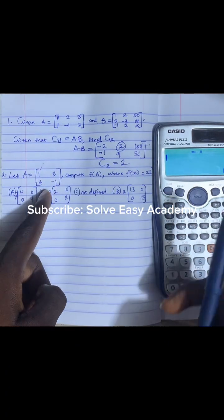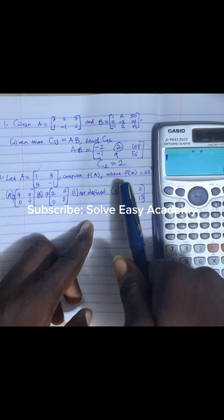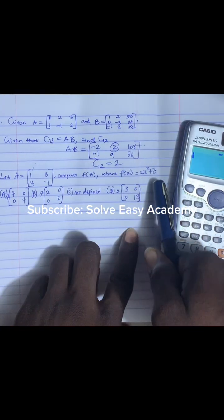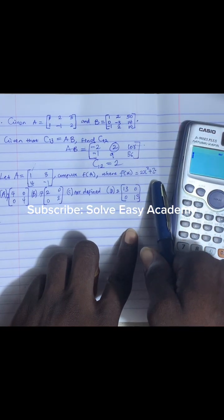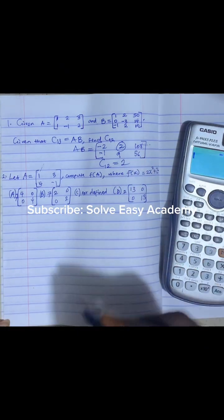Let A equals a 2 by 2 matrix. Compute f of A where f of x is equals to 2x squared plus 2. Now we have options for that question. Now how do we solve this? The first thing we are going to do is: